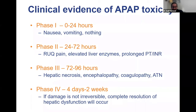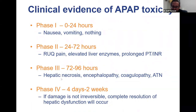The last phase — phase four — can happen from four days up to two weeks. If liver damage is not irreversible, you can have either complete resolution or worsening liver disease; patients die or need a liver transplantation. In our clinical practice at big transplant centers, most patients come in already in phase three — they are already very sick. If someone comes in early, you can use charcoal and other interventions, but if it's already late, these patients may progress to liver failure requiring transplantation.